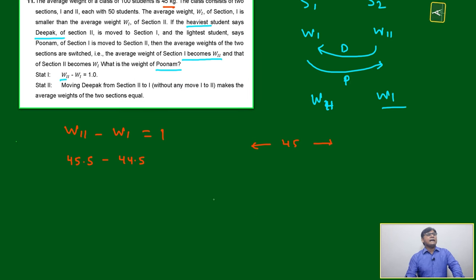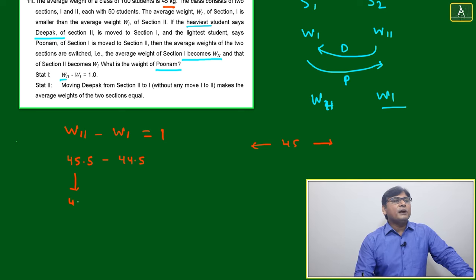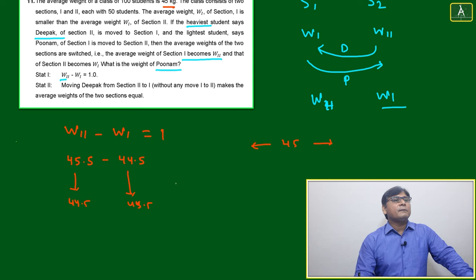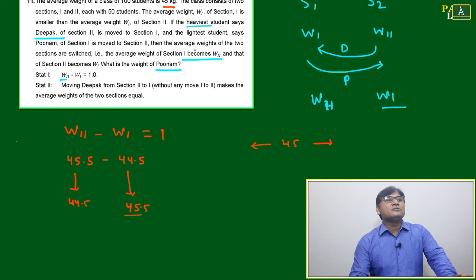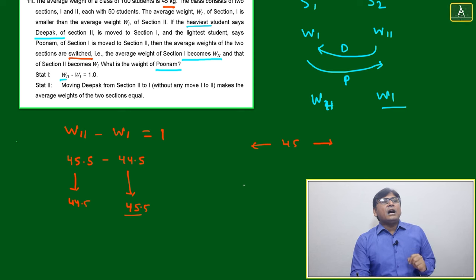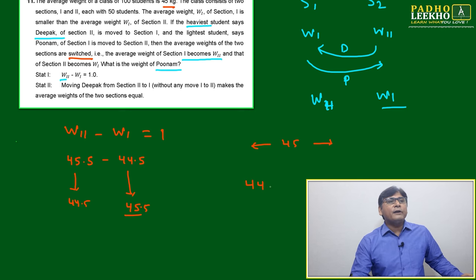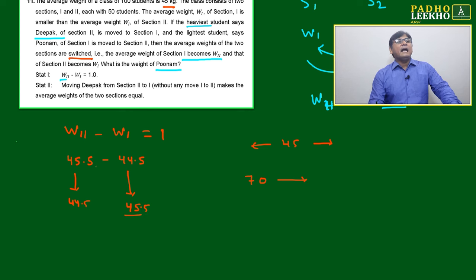After the shifting, averages switch: Section 1 changes from 44.5 to 45.5 and Section 2 changes from 45.5 to 44.5. This is consistent with the condition that averages are switched. To verify, let's take Deepak's weight as 70 — because 45 + 45 = 90 and the difference is around 20, so 90 minus 20 gives approximately 70.